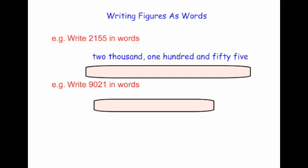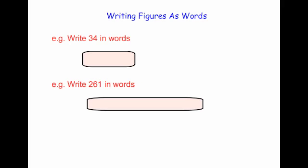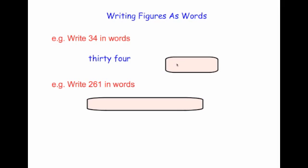Next one, this one you would say it as nine thousand and twenty-one, so you'd write it down as nine thousand and twenty-one. Here we have 34, so you'd write 34.